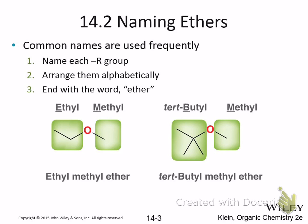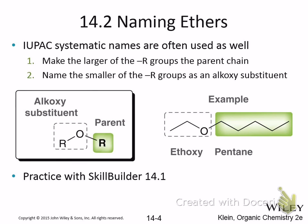What's diethyl ether? Two ethyl groups, right? In systematic naming, you name the parent chain as you normally would, and then the ether is known as an alkoxy substituent. So this is the alkyl group connected by an oxygen, making it an alkoxy group. For example, this would be ethoxy, and this would be methoxy.